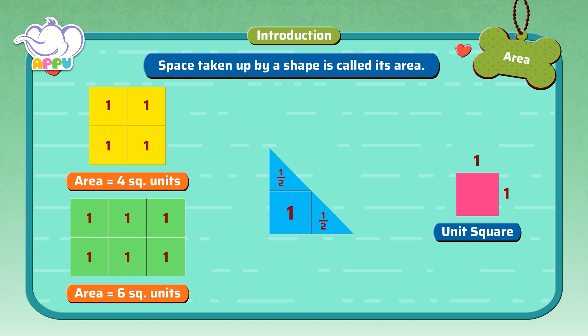We have a total of one plus half plus half, which is equal to two. So, the area of this triangle is two square units.